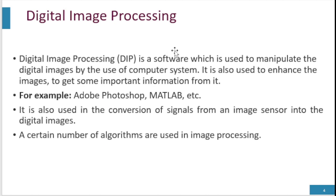Digital image processing refers to the software we use to process and manipulate images — to make them more clear and in digital form. It is software used to manipulate digital images by use of a computer system, and to enhance images to get more important information from them. Examples include Adobe Photoshop and MATLAB, which are the most famous software for processing and converting images into digital form.